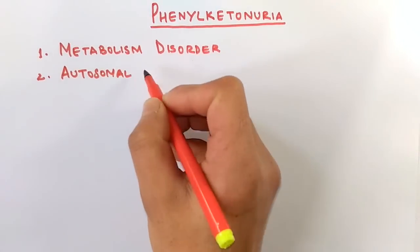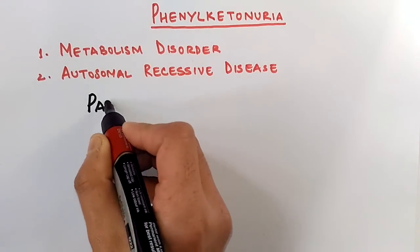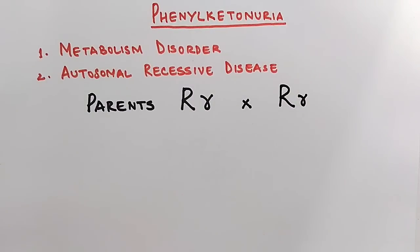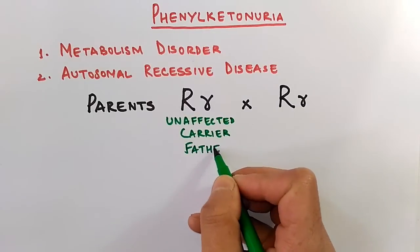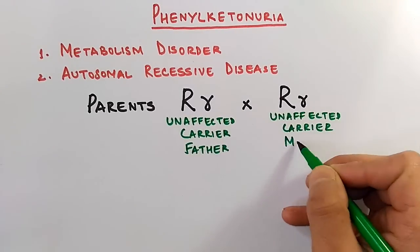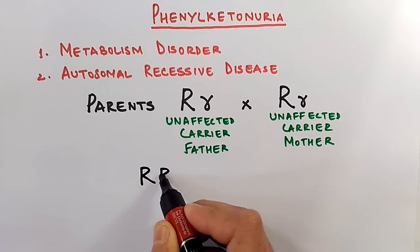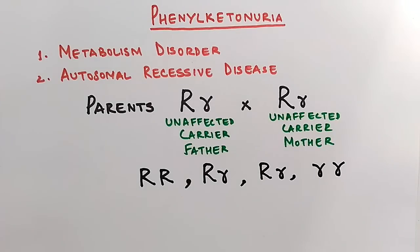The second important thing is that it is an autosomal recessive disease. In autosomal recessive disease, the disease only shows its symptoms when both alleles of a gene are in a recessive form. Taking an example of two parents affected by phenylketonuria — they do not show symptoms because they are only carriers of this disease. The dominant allele expresses itself and suppresses the expression of the recessive allele.